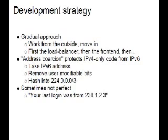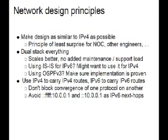We used a shim layer to protect our applications: we take the v6 address, strip off the user-modifiable bits, and hash it into multicast space. This really enabled us to advance without having all of our applications and systems understand v6—though it has a few undesirable properties, notably breaking geolocation. At one point Gmail was telling users 'your last login is from this multicast v4 address.' On network design, what we found to work is to make it as similar to v4 as possible so you don't have to retrain your NOC, and dual-stack everything you can.